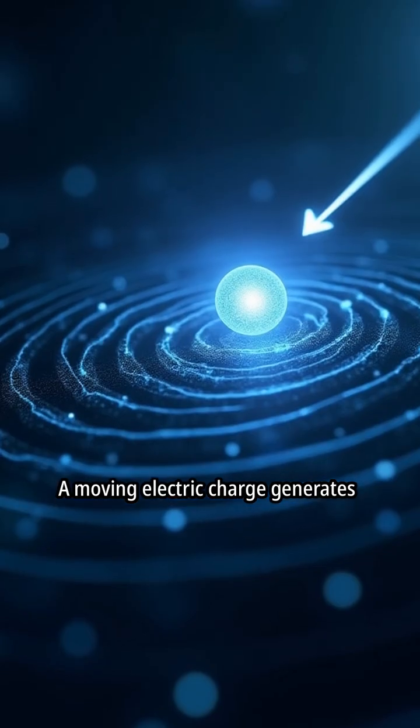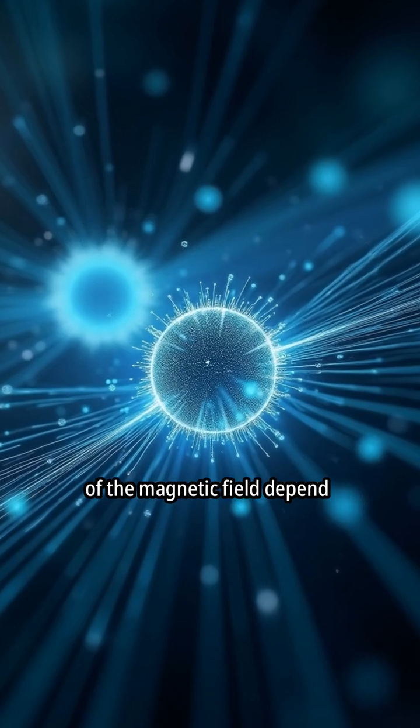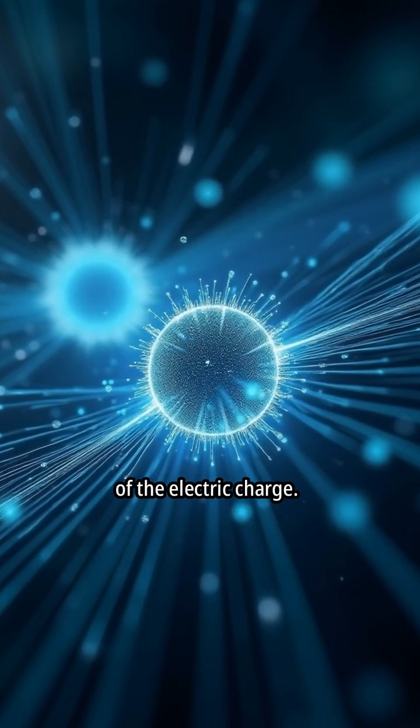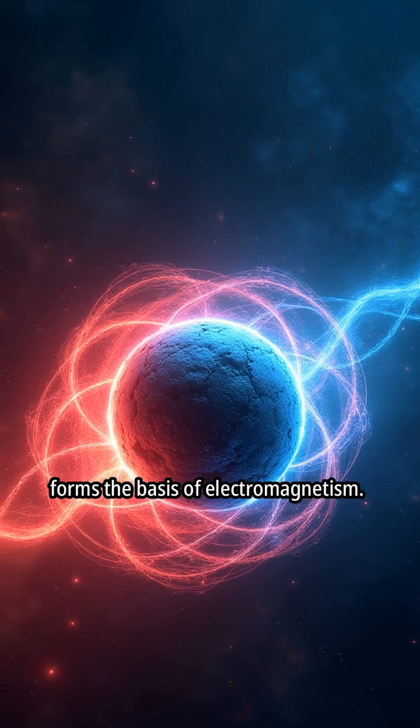A moving electric charge generates a magnetic field around it. The strength and direction of the magnetic field depend on the magnitude and velocity of the electric charge. This fundamental relationship forms the basis of electromagnetism.